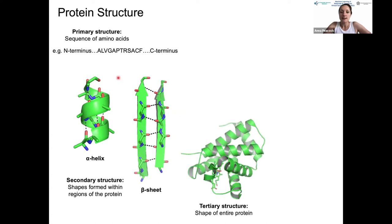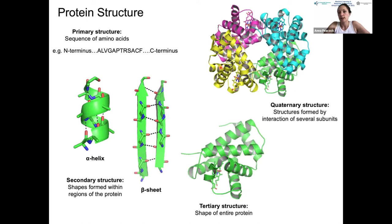How these secondary structure components fold with respect to one another gives us tertiary structure—shown here as a protein subunit where alpha helices pack against one another. Last but not least, where multiple subunits come together, we have quaternary structure. Hemoglobin is a classic example, where four subunits pack together in a defined quaternary arrangement.